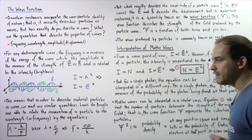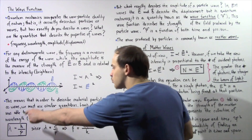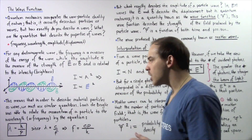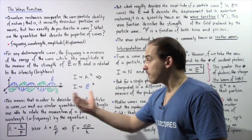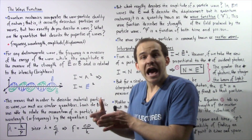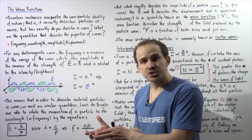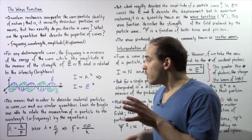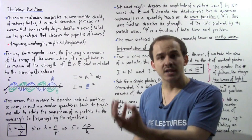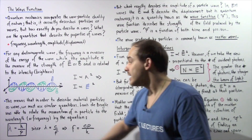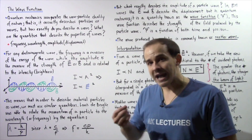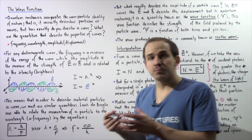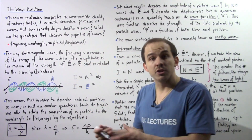Louis de Broglie was able to relate the momentum of a particle, such as an electron, to the wavelength or frequency that particle produces. The equation is given by: if we take h, Planck's constant, and divide it by the momentum of our particle, that gives us the wavelength produced by that particle.